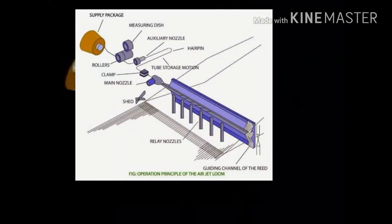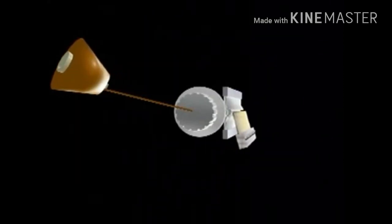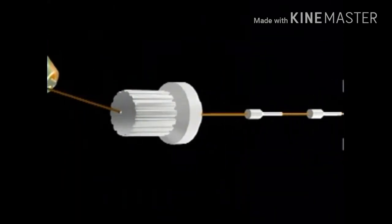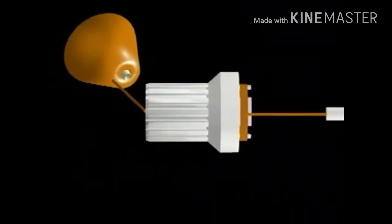Weft insertion is the process of transporting weft yarn from the filling packages into the open shed and across the width of the machine.